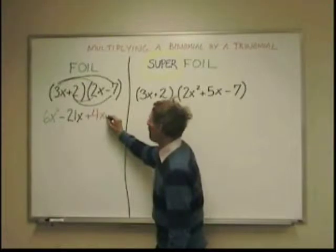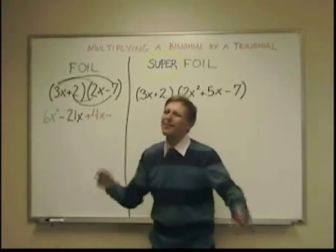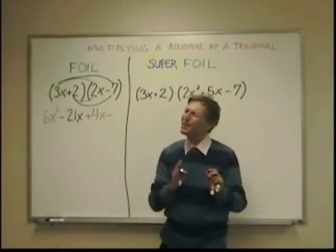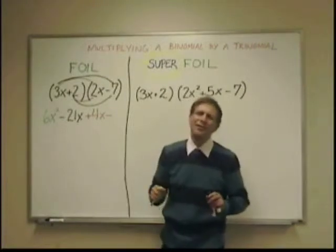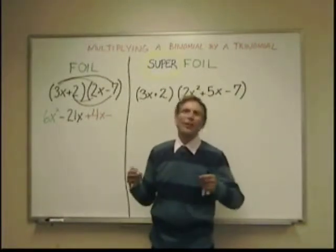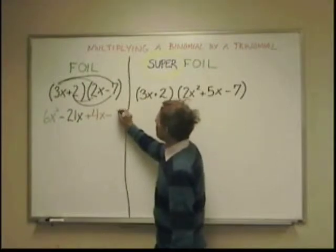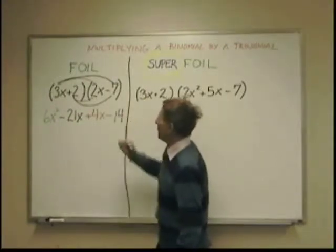2 times negative 7. Positive 2, negative 7 is unlike signs. Have to watch your signs. Please don't forget those. Review those if needed. So many mistakes are caused by sign errors. And that's 14, negative 14.